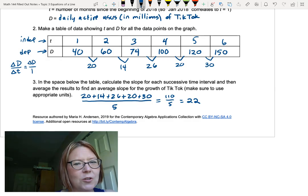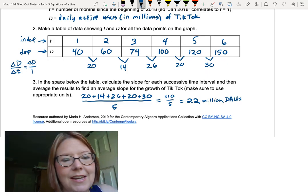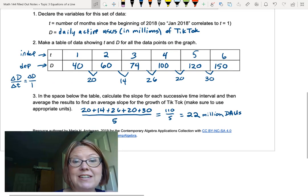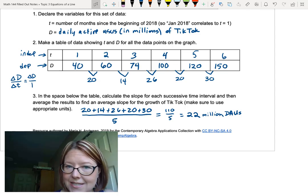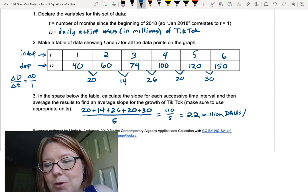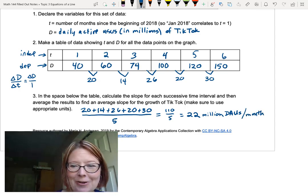Now let's make sure we know what units those are. So that's the change in daily active users. So this is 22 million daily active users. And then our denominator, our time component, if we go back up to where we defined it, it's the number of months since the beginning of 2018. We're growing at a rate of 22 million DAUs per month, not per year. So do be careful about that.